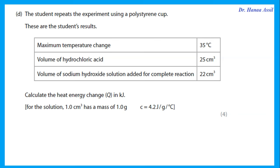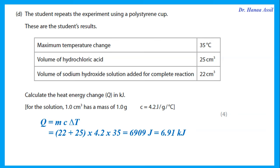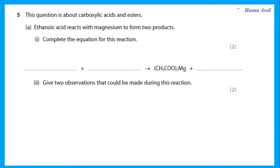The student repeats the experiment using a polystyrene cup. Calculate the heat energy change in kilojoules. Use q = mcΔT. The total mass of solution is 25 cm³ HCl plus 22 cm³ NaOH. Multiply that by c = 4.2 and the temperature change ΔT = 35. This gives q in joules; divide by 1000 to convert to kilojoules.